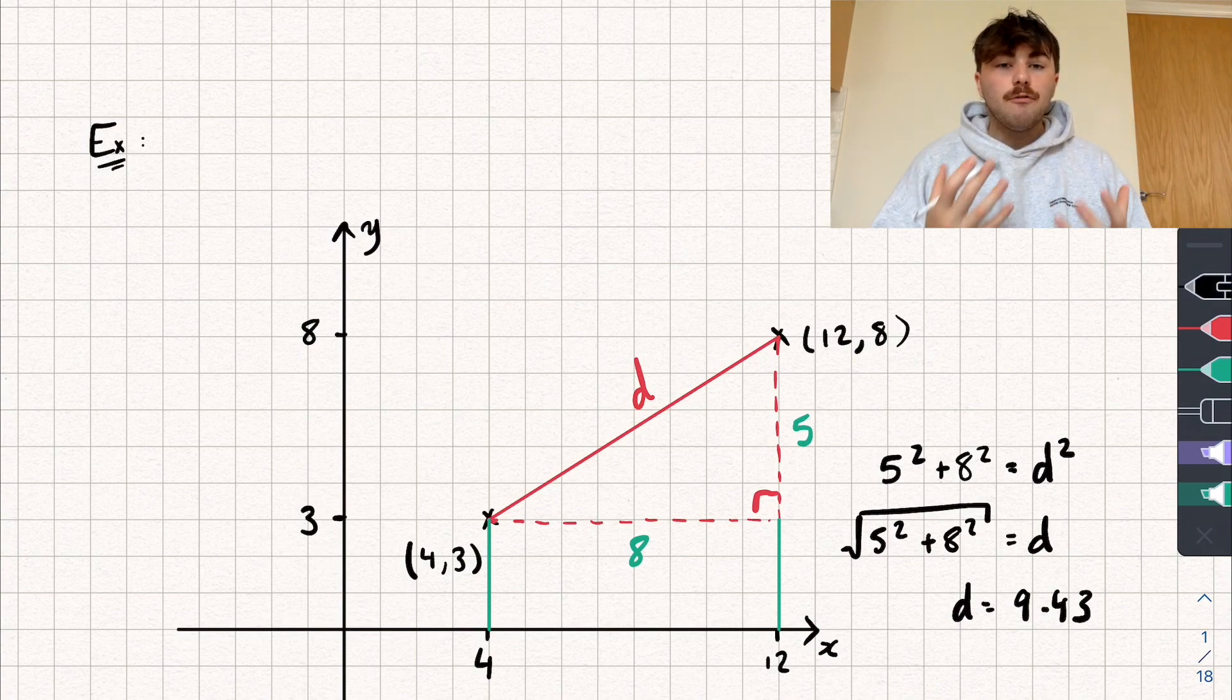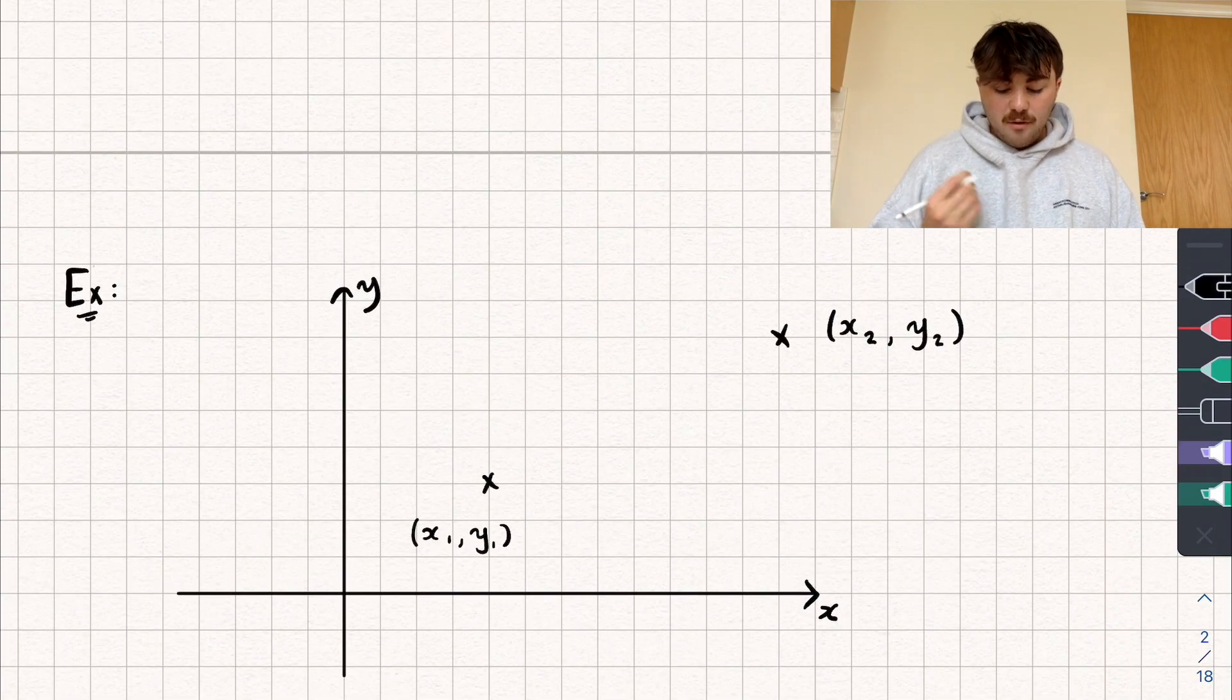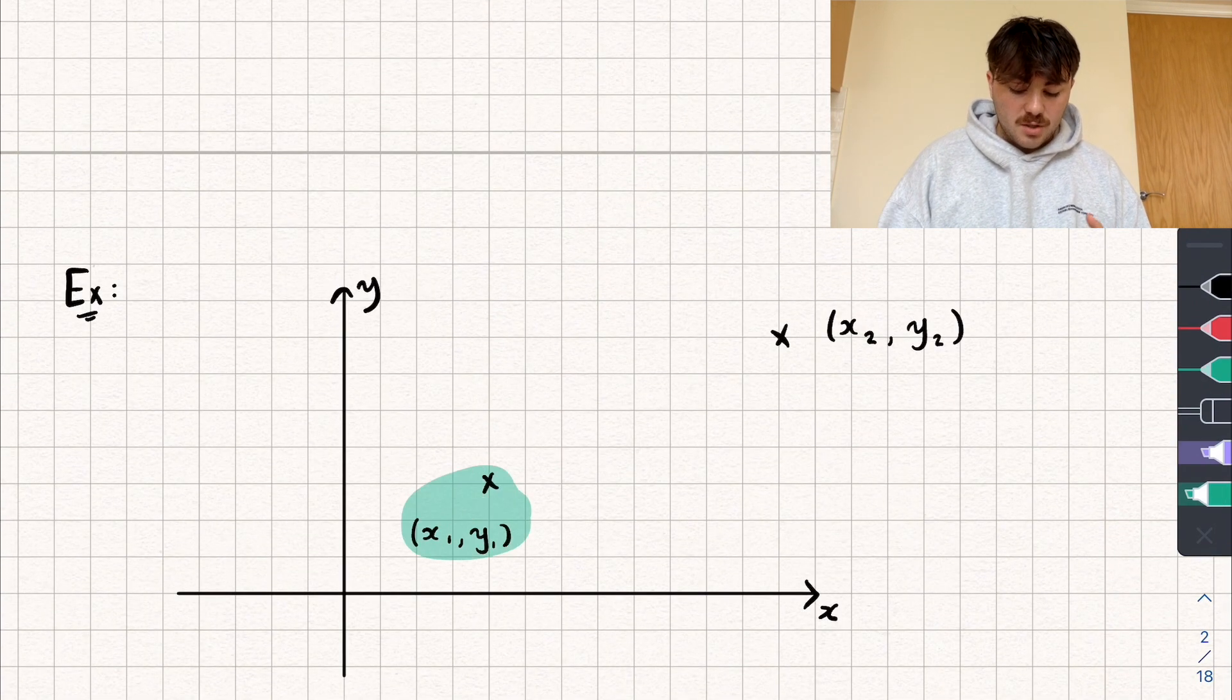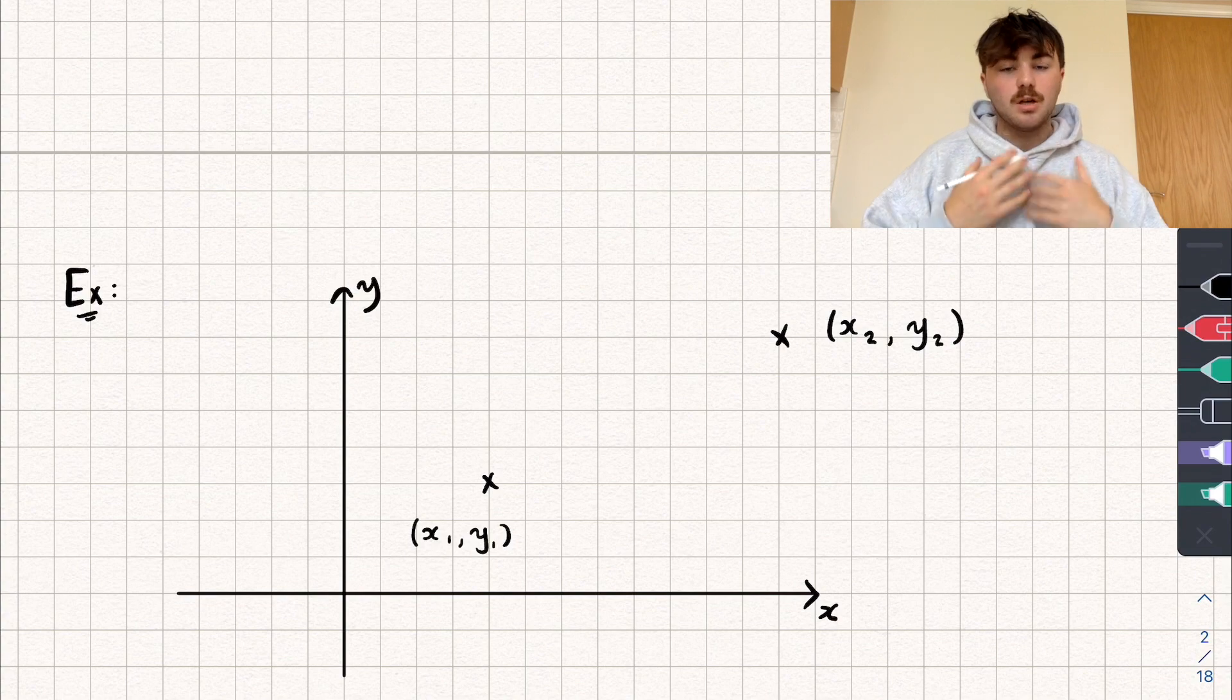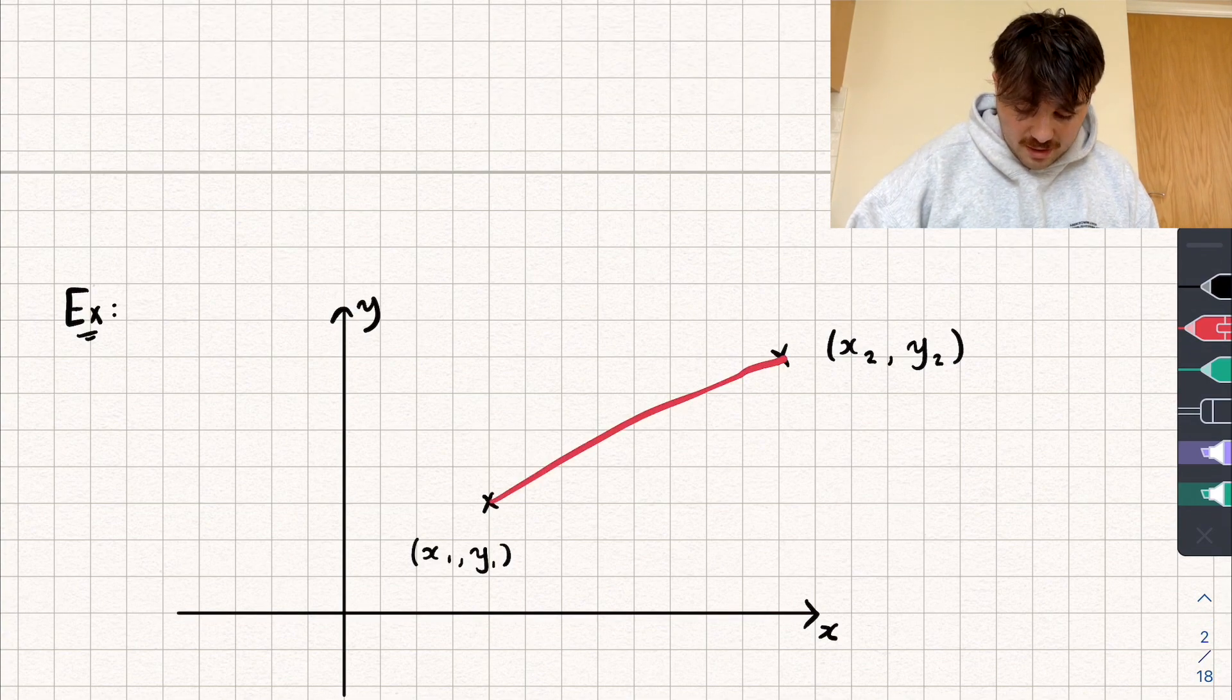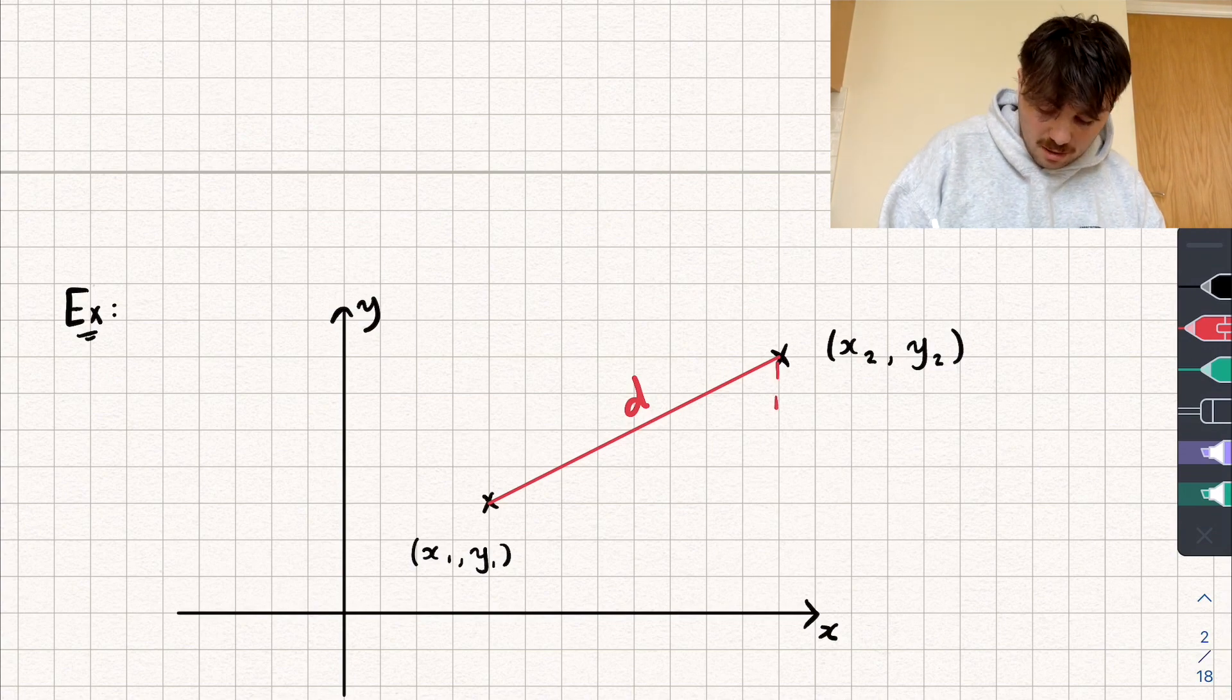Now let's look at a more general case and we'll try and get a formula to calculate the distance between two points using this idea. So here we have one point given by the coordinates x1, y1, and we have another point given by the coordinates x2, y2. Again, going to work through it the same way. So we want to find this distance here, again I'll call it D because I don't know what it is. And again, we're going to construct some right-angled triangle like so.